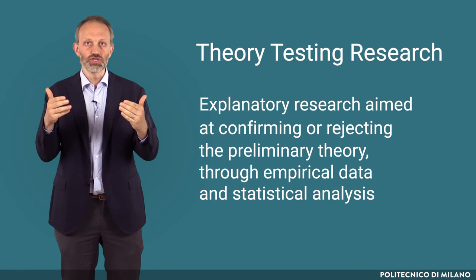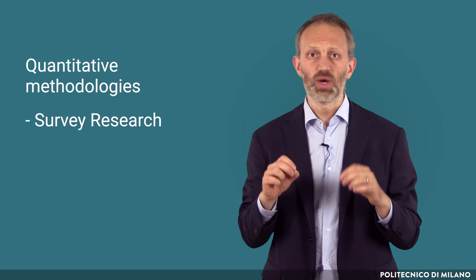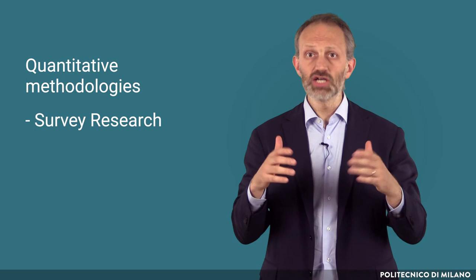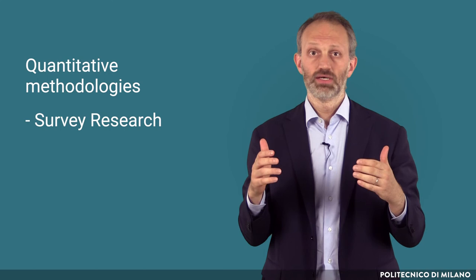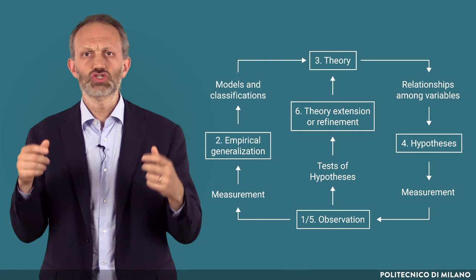The second part of the cycle is called theory-testing research, that is explanatory research aimed at confirming or rejecting the preliminary theory through empirical data and statistical analysis. We typically use quantitative methodologies for this purpose, and survey research is one of the most common, since it allows to gather structured data from a large number of observations, which can then be analyzed statistically. This is also called deductive research, because we move from an abstract theory to the empirical measurement and validation.